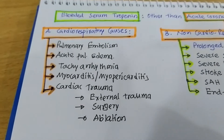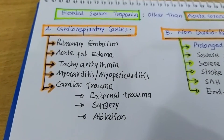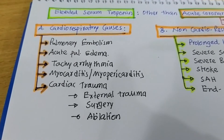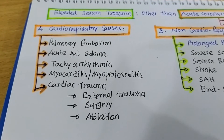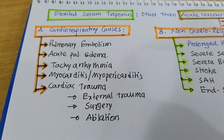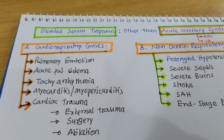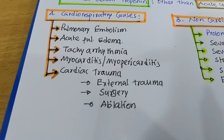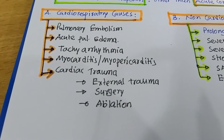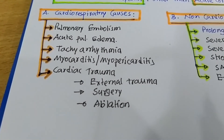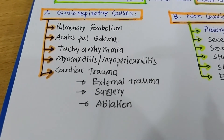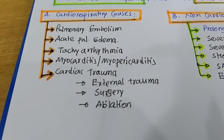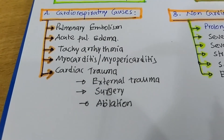Number one cardiorespiratory cause: pulmonary embolism — remember that. Then, acute pulmonary edema (not chronic) may increase serum troponin a little bit, not in the range of acute coronary syndrome. Also, tachyarrhythmias such as supraventricular tachycardia or ventricular tachycardia may increase the serum troponin level.